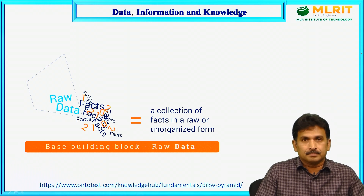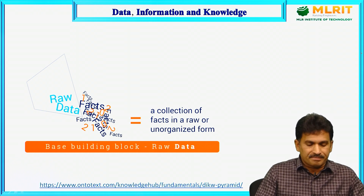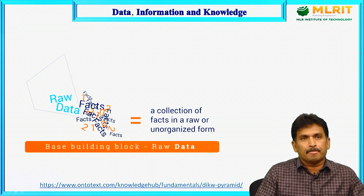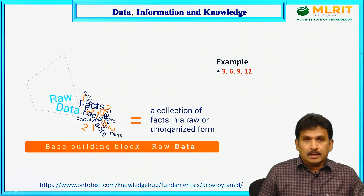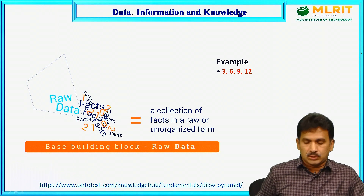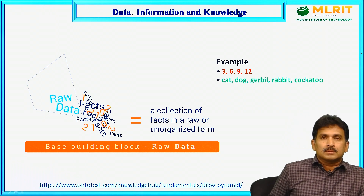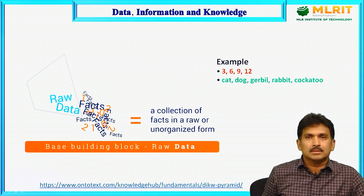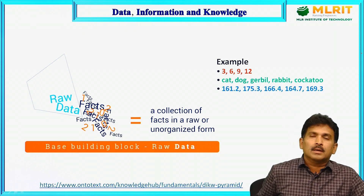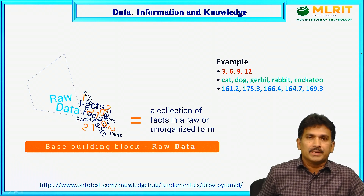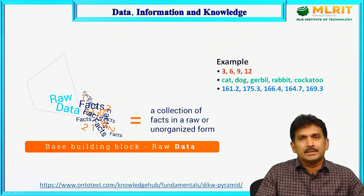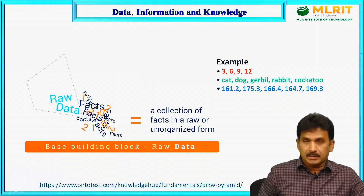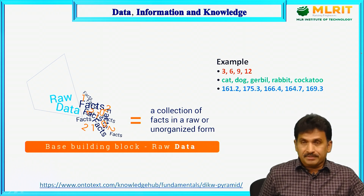First, let us see what is data. It is a collection of rough facts or unorganized form. Let us take one simple example. There are numbers like 3, 6, 9, 12 and some names — 6 animal names: cat, dog, gerbil, rabbit, coccato — and there are some float values like 161.2, 175. These are just numbers and text; they do not give any meaning unless we add some meaning or a context. It is very difficult to understand.